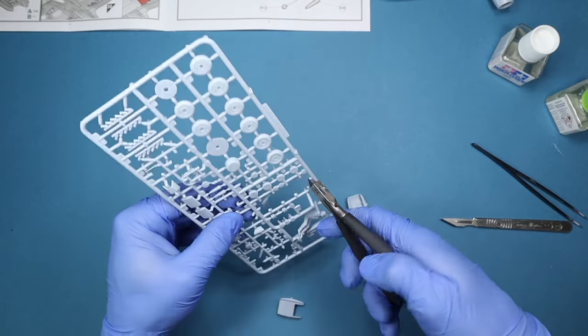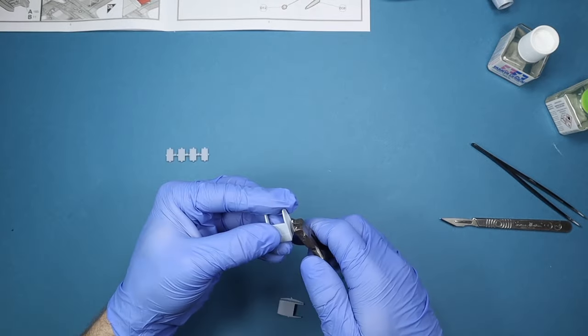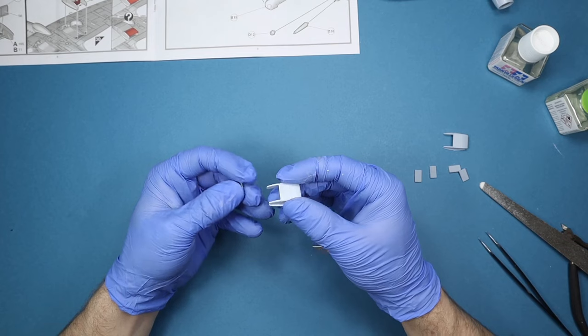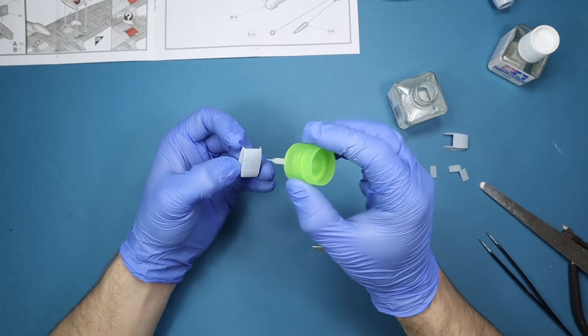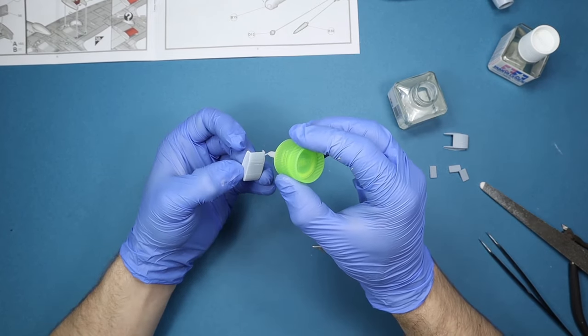For the radiator coolers we need to paint the inside gray but the grills need to be black. Cut the parts off and add the flaps in open or closed, but leave the grills separate. I've gone for closed as it's more simple.